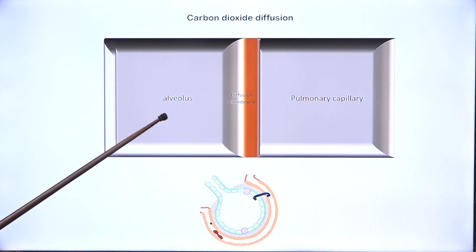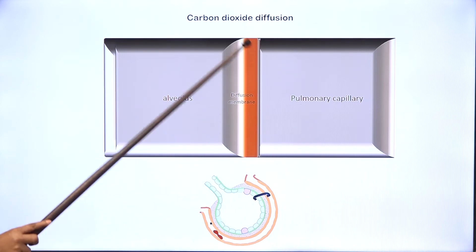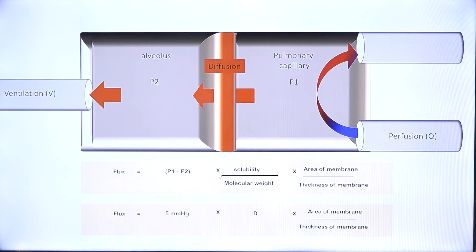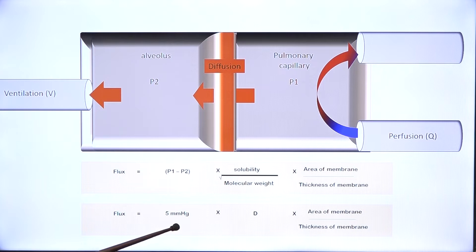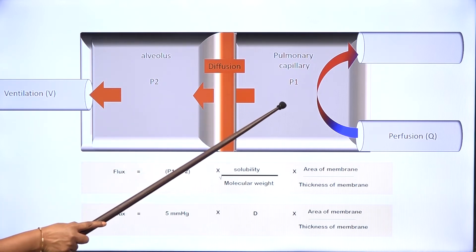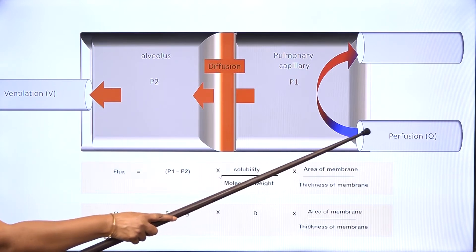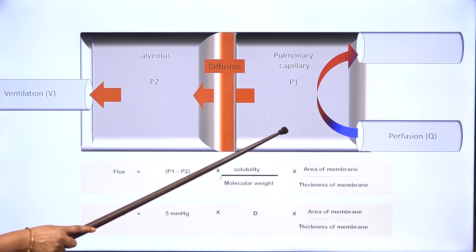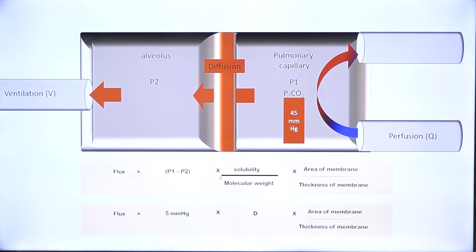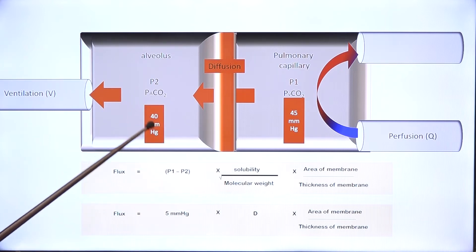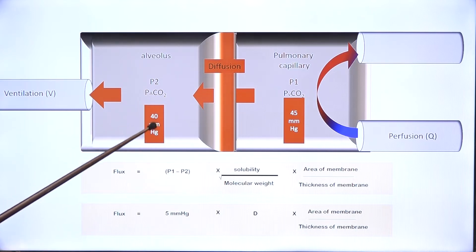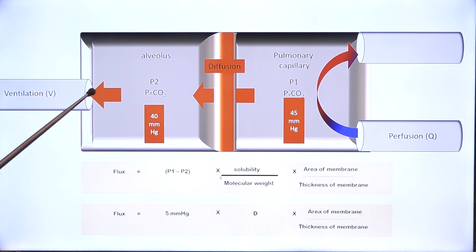We have seen this cartoon before. Let us think of this as the alveolar compartment, this as the pulmonary capillary, and that is the diffusion membrane shown here. This is Fick's equation, which tells us that flux of a gas across a membrane equals the difference in concentrations, represented as partial pressures. P1 is the carbon dioxide concentration in the pulmonary capillary — systemic venous blood carbon dioxide — which we call PVCO2, at 45 mmHg. Ventilation maintains alveolar carbon dioxide at 40 mmHg.